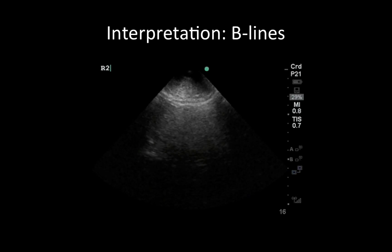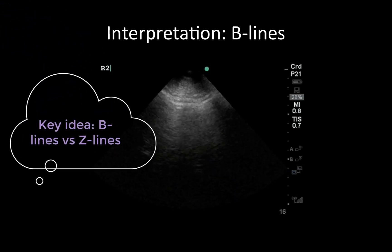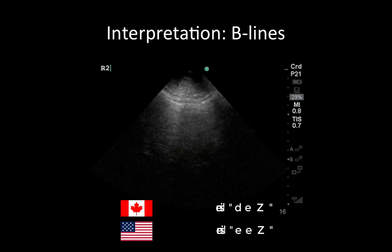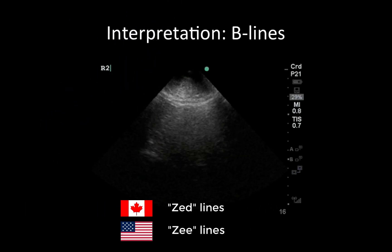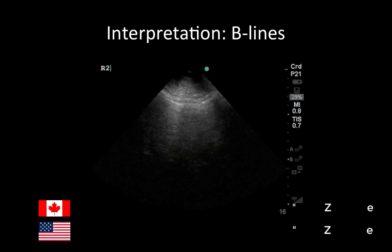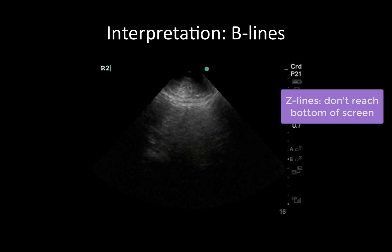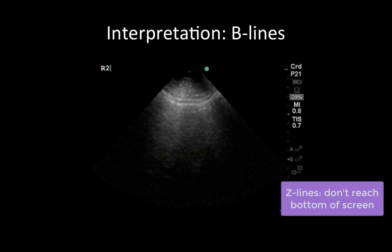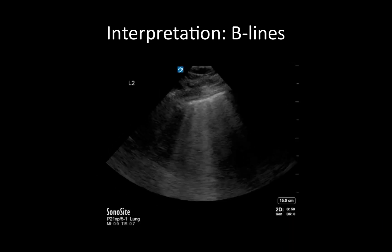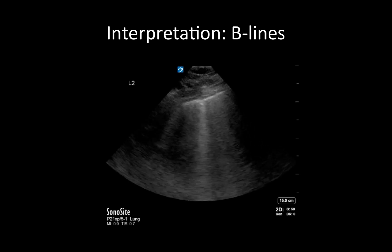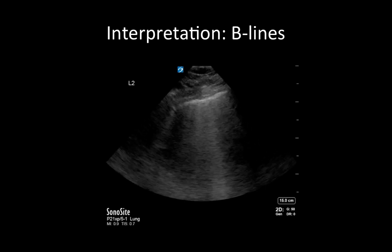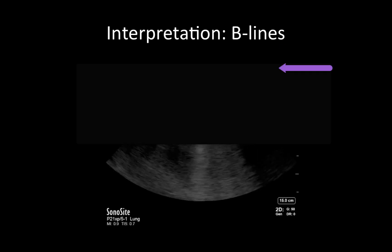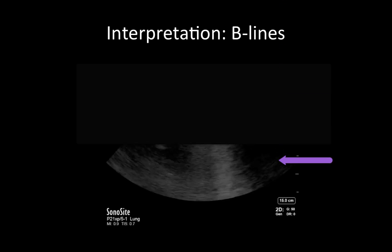In the interpretation of B-lines, one common mistake is to confuse B-lines with Z-lines. Z-lines are vertical artifacts that emanate from the pleura but do not travel the entire depth of the screen. Their exact physiologic correlate is unknown, but they are not pathological findings and should not be mistaken for B-lines. If you're ever unsure, increase your depth and focus on the bottom part of your image to see if the vertical artifacts do in fact extend the entire depth of the screen.